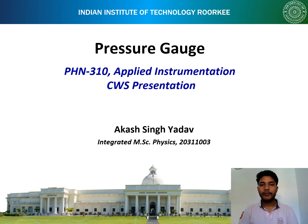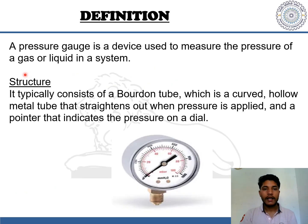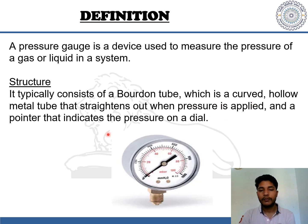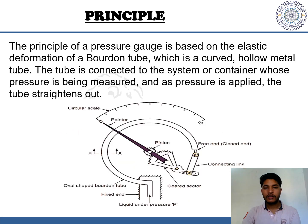Good morning, this is Akash Singh Yada from MSP third year. I will be presenting on the topic of pressure gauge. A pressure gauge is a device used to measure the pressure of a gas or liquid in a system. Its typical structure consists of a Bourdon tube, which is a curved hollow metal tube that straightens out when pressure is applied, and a pointer that indicates the pressure on a dial.